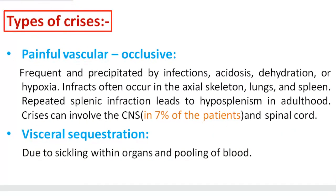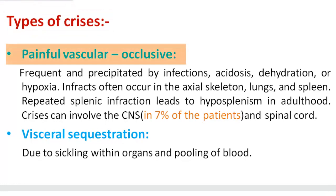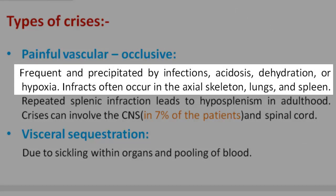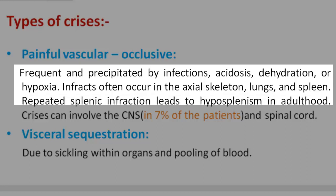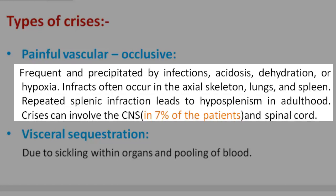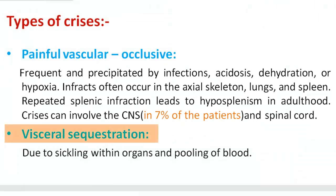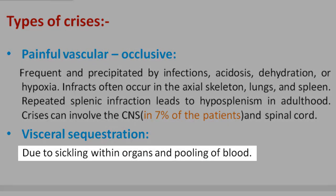Reading 4. Types of crisis. Painful vascular occlusive: frequent and precipitated by infections, acidosis, dehydration, or hypoxia. Infarcts often occur in the axial skeleton, lungs, and spleen. Repeated splenic infarction leads to hyposplenism in adulthood. Crisis can involve the CNS in 7% of patients and the spinal cord. Visceral sequestration: due to sickling within organs and pooling of blood.